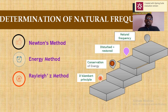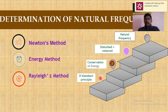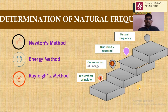Three methods to determine natural frequency: number one is Newton's method, number two is energy method, number three is Rayleigh's method. Use D'Alembert's principle when the body is in motion; use conservation of energy when the body has no motion. The disturbance should equal the restoring force, and then you find the natural frequency.